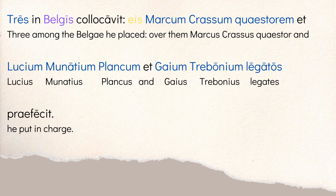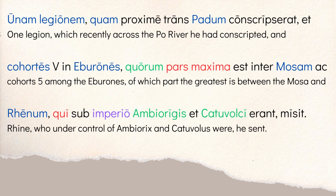Picking up the narrative: tres in Belgis collocavit — he placed three of his legions among the Belgae. Over them, using the dative with praefecit, he put in charge Marcus Crassus as quaestor, and Lucius Munatius Plancus and Gaius Trebonius as legates. So Plancus and Trebonius are the lieutenant generals commanding the three legions among the Belgae in Belgium.